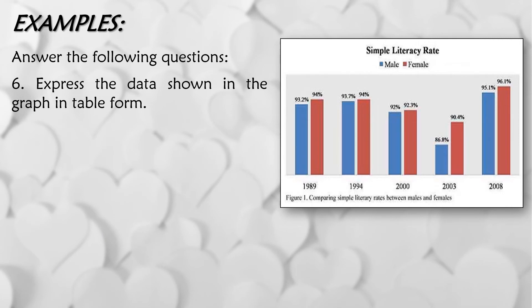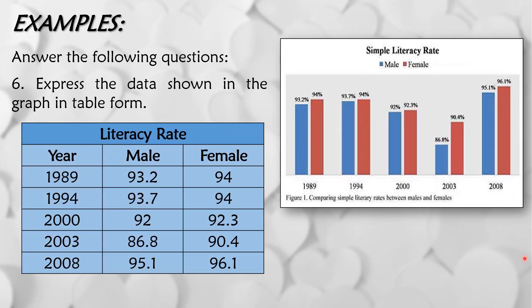Sixth question, express the data shown in the graph in table form or tabular form. So in our given data, pwede natin itong tabular form gamit nito. So meron tayong given title, literacy rate. And then sa first column is yung year, second is male, and third is female.